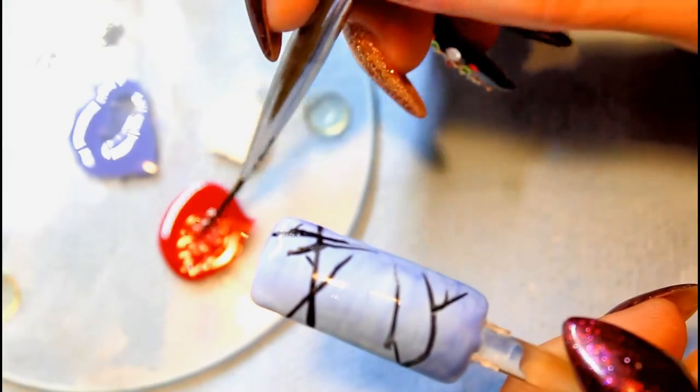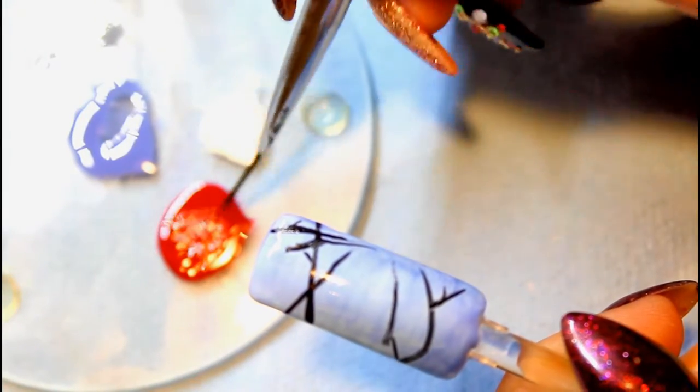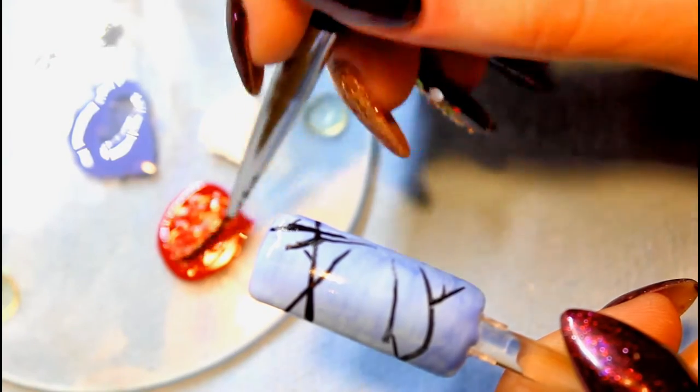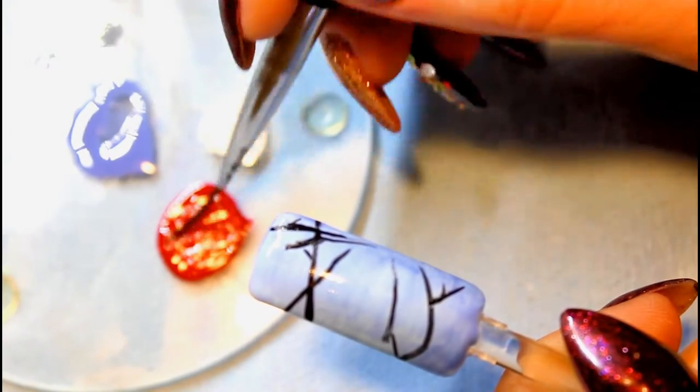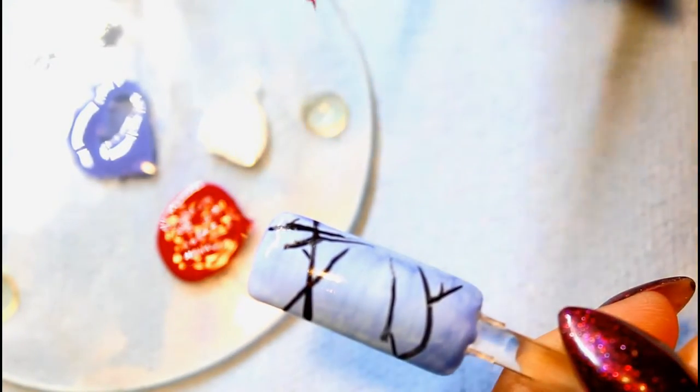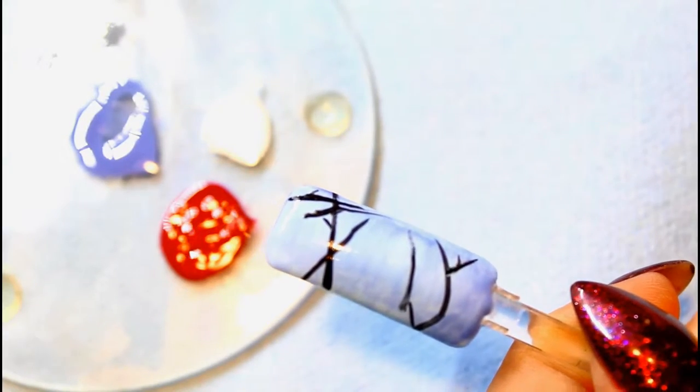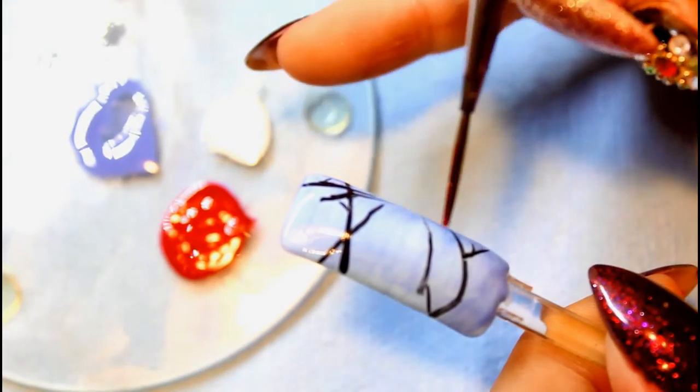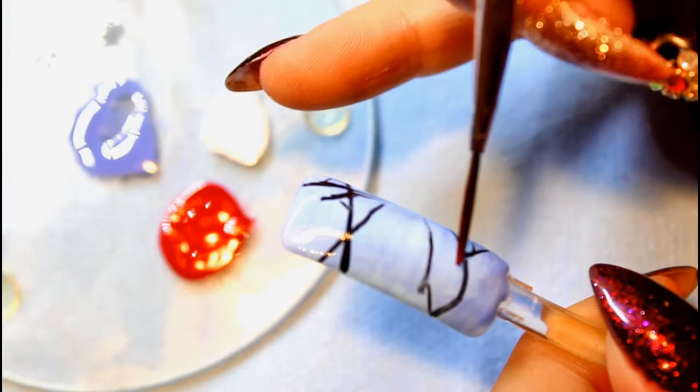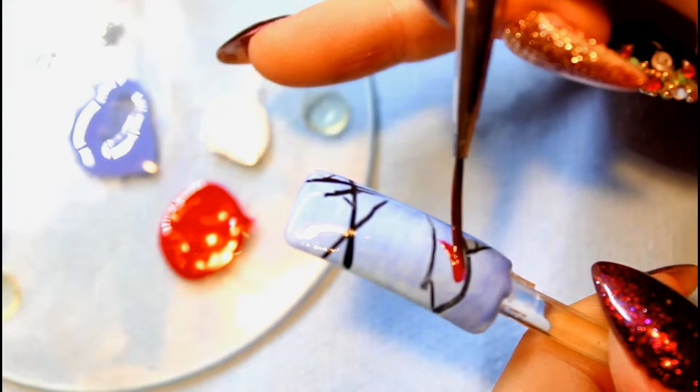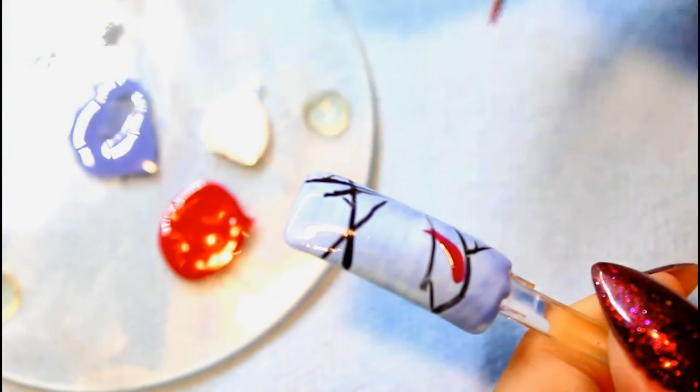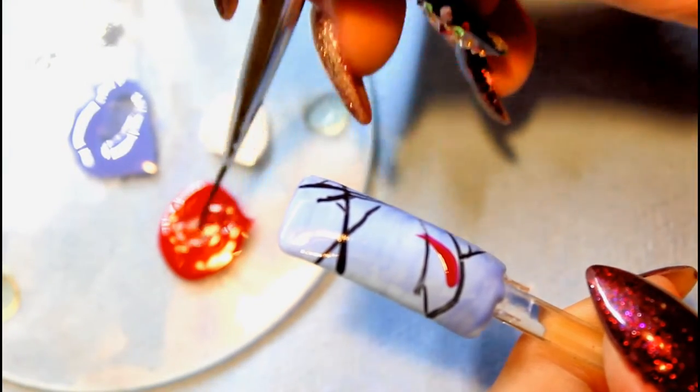Once the acrylic paint is dry, you can use your striping brush and your thickened red paint. Start painting in your cardinal and the berries. You want to break it down into basic shapes. Start by painting just the body of the bird.